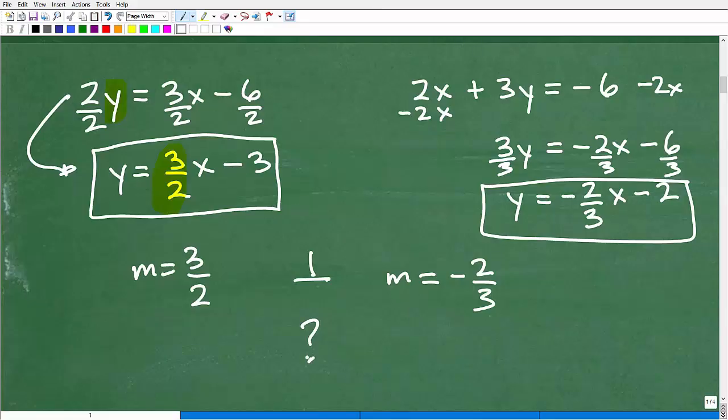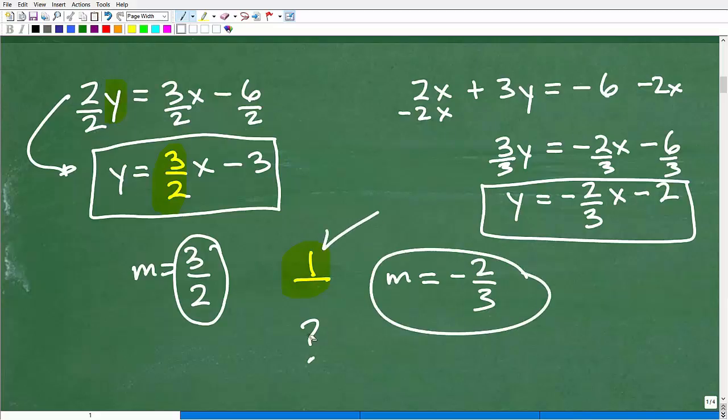Now let's answer the question: are these lines perpendicular? Hopefully you would say yes, it is. Because here we have 3 halves, and what's the negative reciprocal of 3 halves? Well, this is positive, so it's going to be negative. I'm going to flip these numbers. And in fact, that's the situation. That's the relationship between these two slopes. So yes, indeed, these lines are perpendicular.